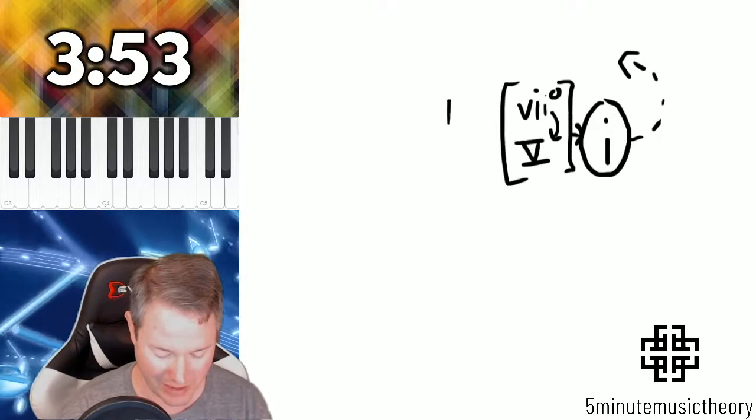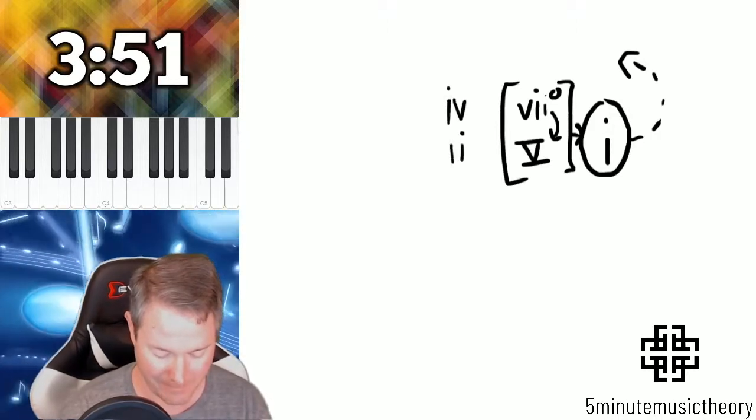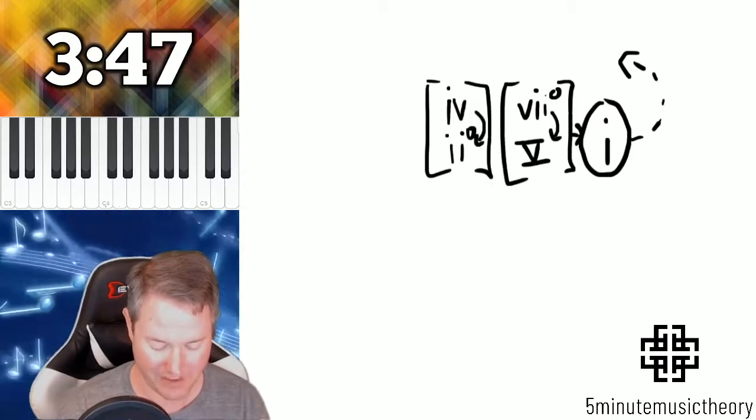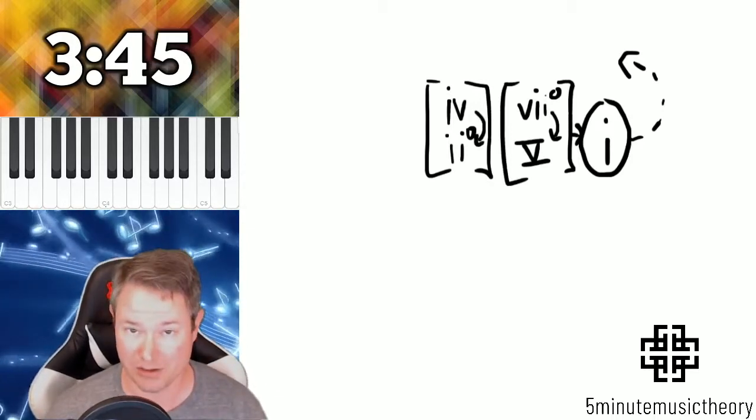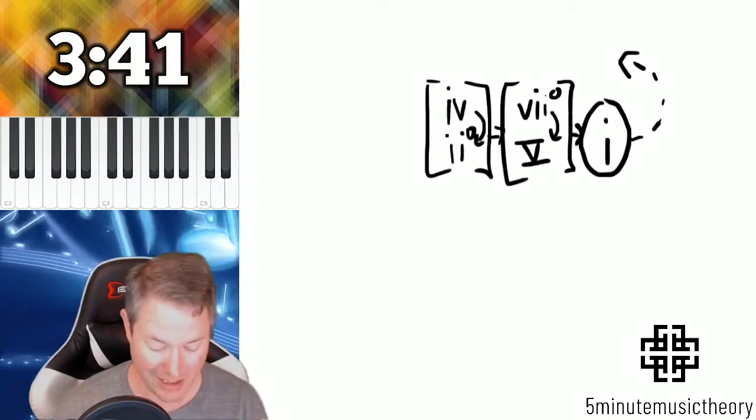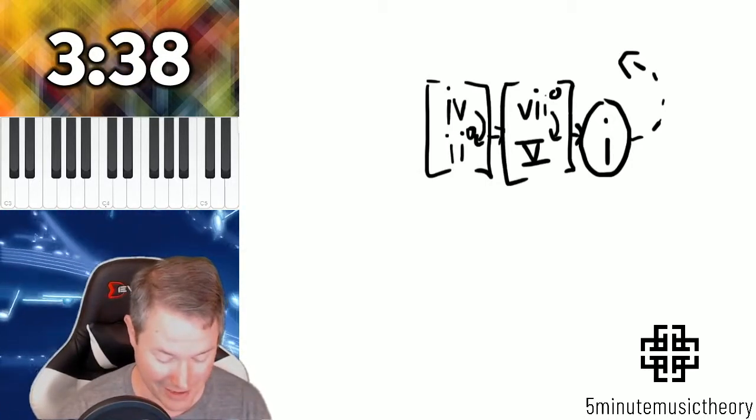Here's the one that's a little bit different as far as the qualities go. We have subdominant, which is minor in a minor key, and supertonic, which is actually diminished. That's the only difference, there's different qualities there.